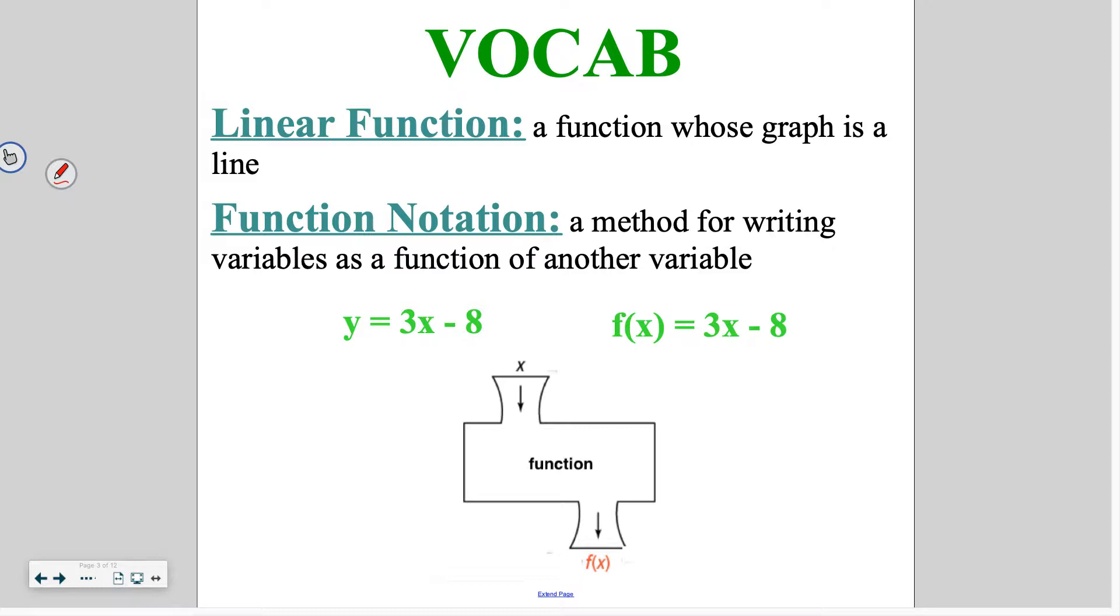Essentially what function notation means is in the last chapter you saw the equation written as y equals 3x minus 8. This function notation simply means that we are changing it from y, from a second variable, to be written as one variable. So what it's saying is we have function f, that is this equation, with variable x. The f is just what we're using to name the function.